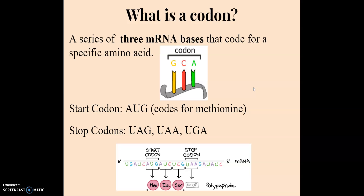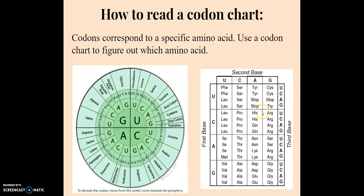So once again, what's a codon? A series of three mRNA bases that code for a specific amino acid. We break up the code into groups of three — the codons — in order to find it. We know the start codon is AUG, which always codes for methionine, and then there are three different stop codons. These are the codons that stop the protein from being created. You have a chart to help you figure out what amino acid the codon specifically codes for.